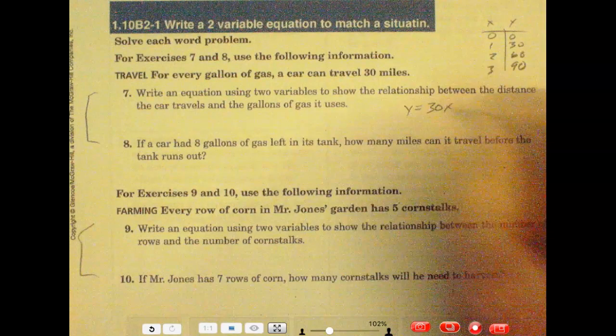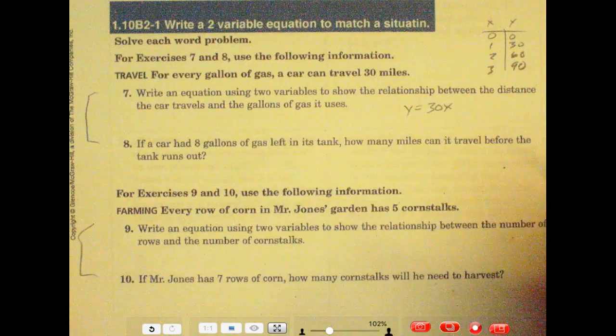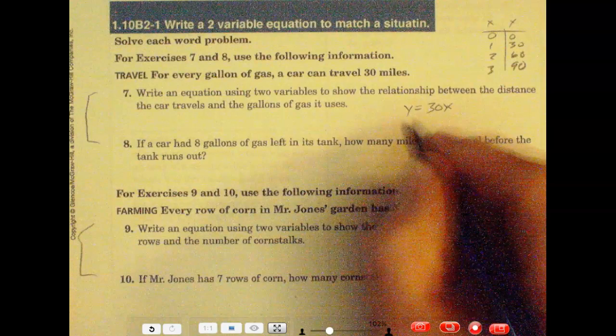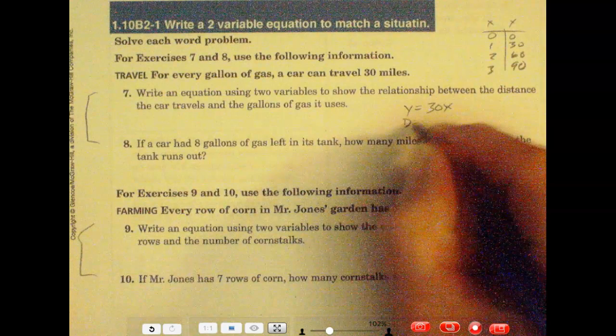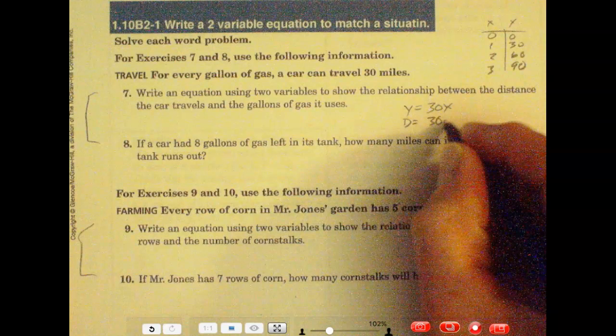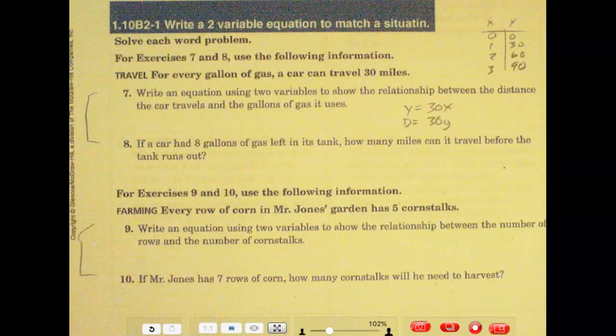Well, that's a two-variable equation using x and y. We now just have to kind of substitute in what these variables mean. So the distance is what the y is. The distance is equal to 30 miles times the number of gallons. That's the way she works out.